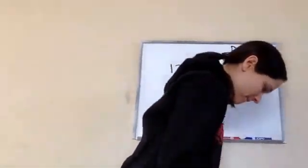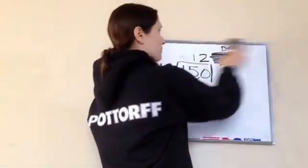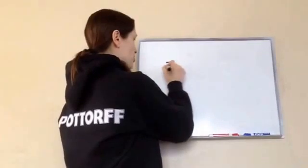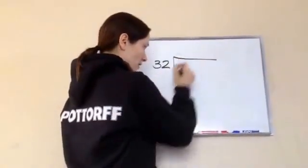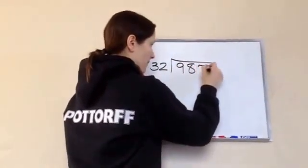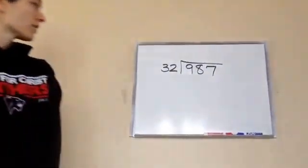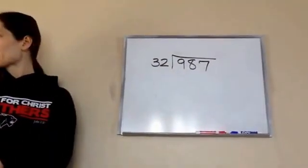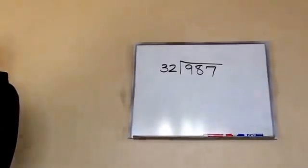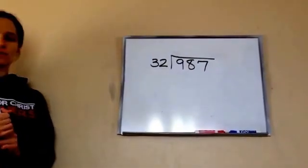All right, one more and then you're done. This was a pretty quick lesson. I want you to do this one on your own. On my paper? Uh-huh. There you go, 32. 987 divided by 32.